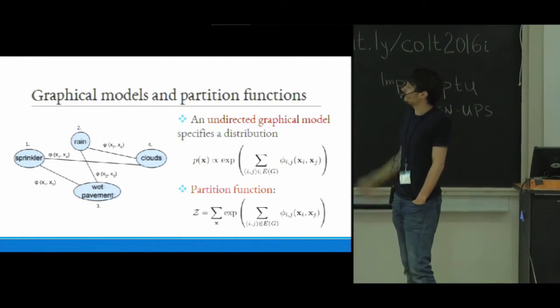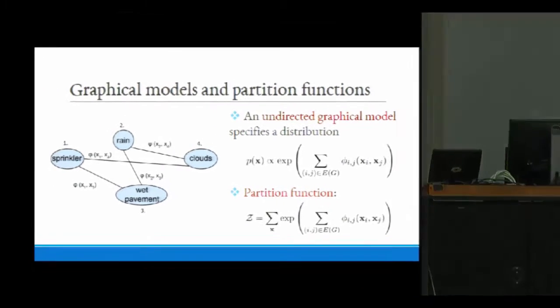An undirected graphical model is just a way to compactly specify a distribution. For example, if you look at the image on the left there, this you can interpret as a distribution over {0,1}^4 in the obvious manner.